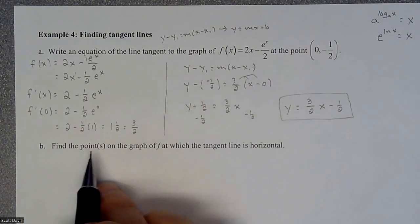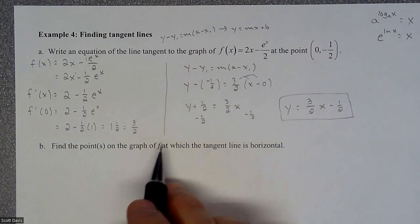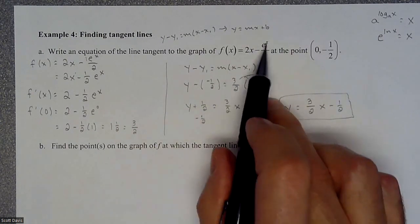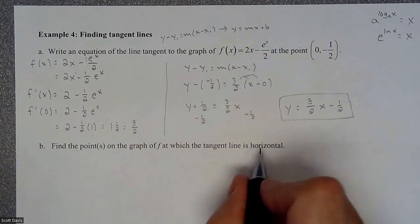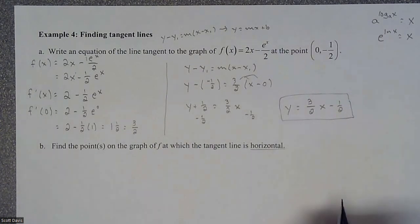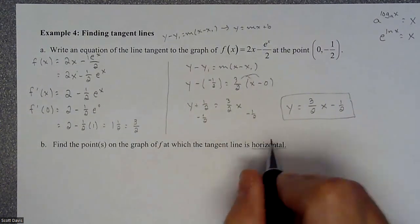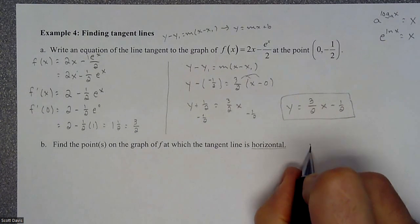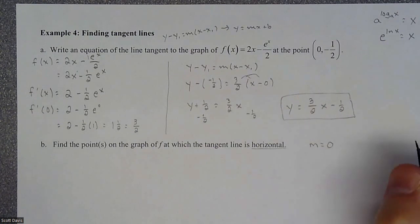The extra part of this is find the point or points on this graph, as to which the tangent line is horizontal. So let's talk about that real quick. The tangent line is horizontal. You're talking about a slope equaling 0.